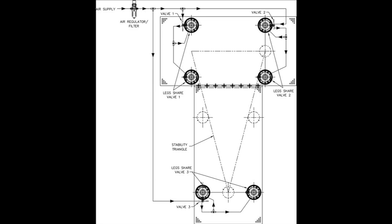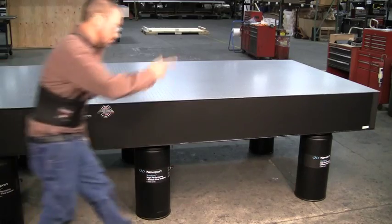Regardless of the size or shape of the table system, the basic components are the same. The main air supply should be passed through some type of air regulating filter. The ARF should feed only three leveling valves, and those leveling valves should be configured to supply the optimal number of isolators to create the largest stability triangle.